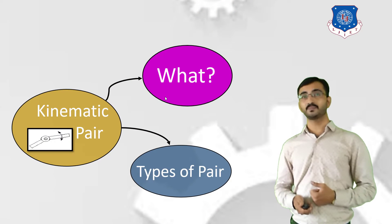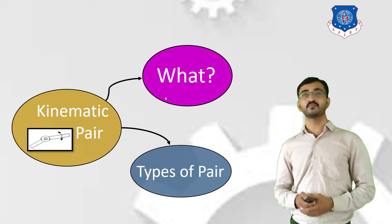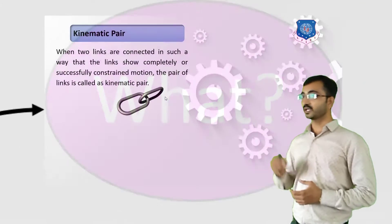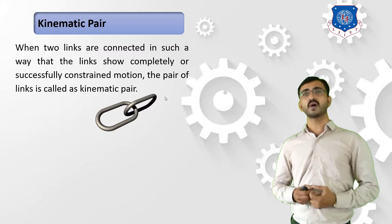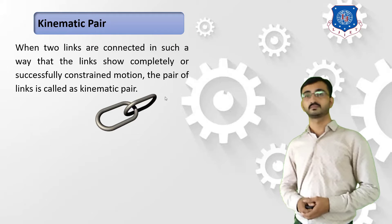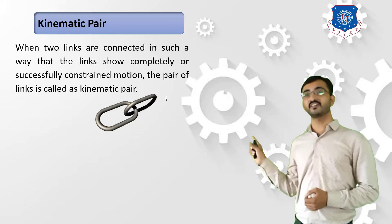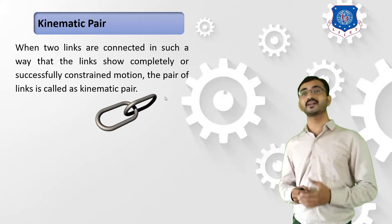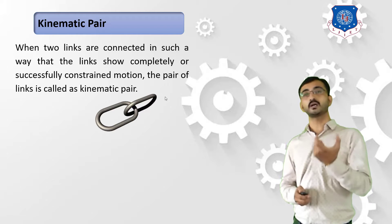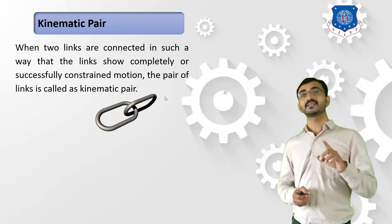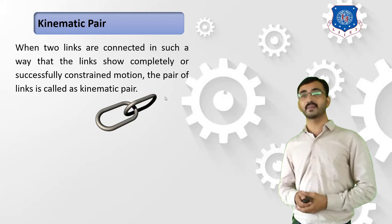Let's learn what is a Kinematic Pair and its various types. The word 'pair' means a combination of two objects, and this combination can be termed as a pair. Now, how can we define a Kinematic Pair? If we have a combination of two links which are producing completely or successfully constrained motion, then and only then we can term it as a Kinematic Pair.